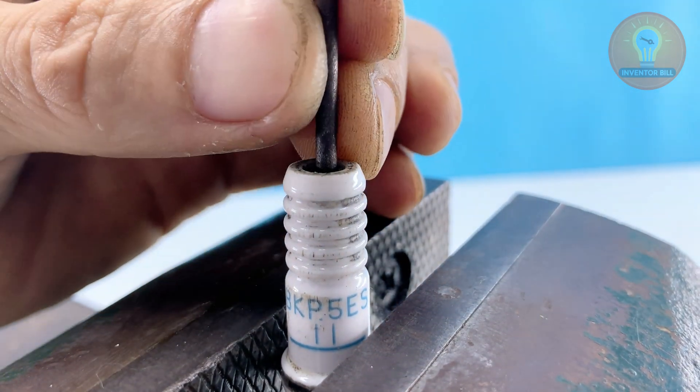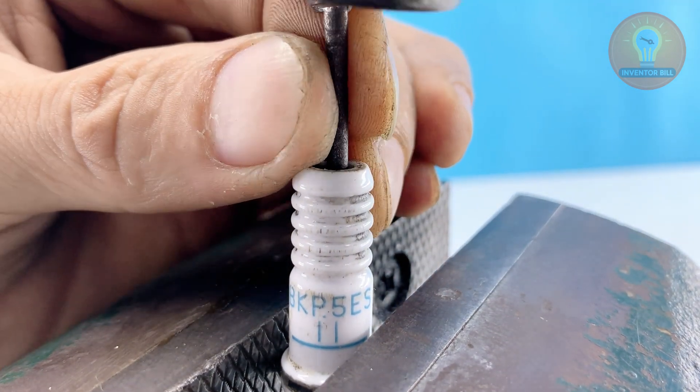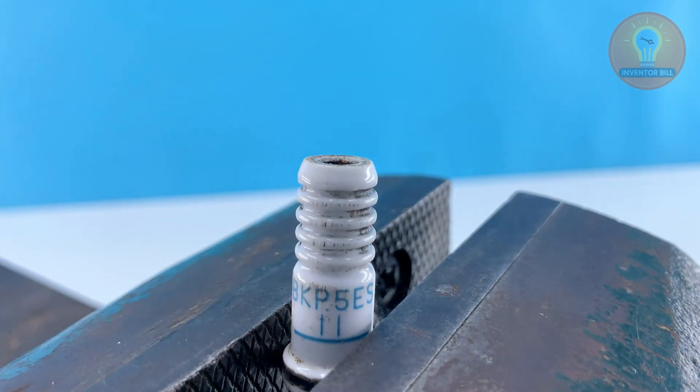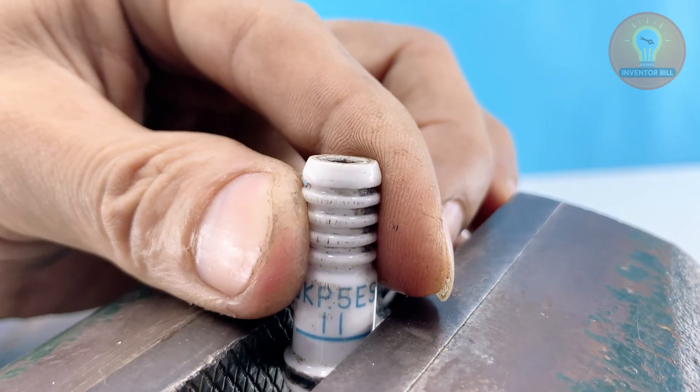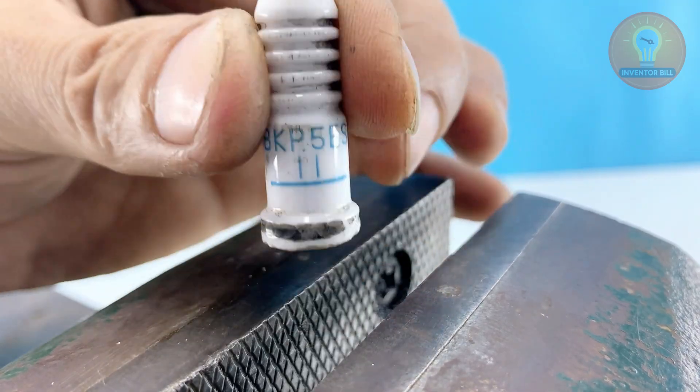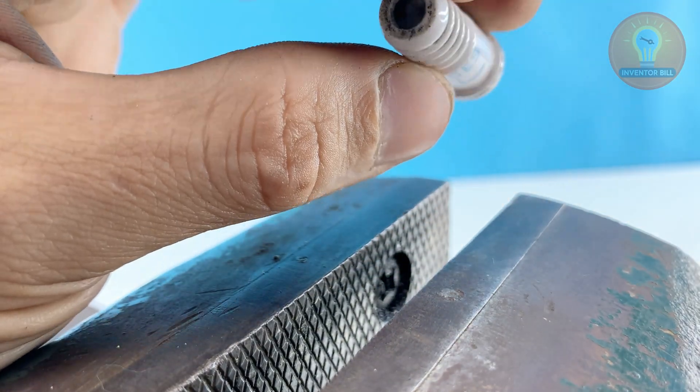Next, take a small nail or a thin drill bit and carefully push it through the center of the ceramic core. The goal is to make a straight hole from top to bottom. That's where the welding rod will fit later. Work slowly and avoid cracking the porcelain.